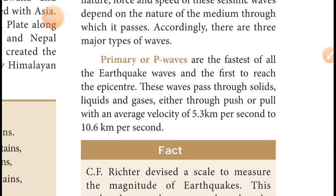To summarize the primary wave: first, it is the fastest wave. Second, it reaches the epicenter first. Third, it passes through three levels of medium — solid, liquid, and gas. The average velocity of primary waves is 5.3 to 10.6 kilometers per second. That is the complete detail about the primary wave.